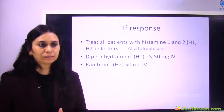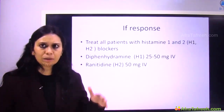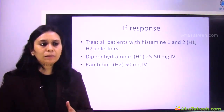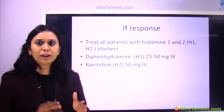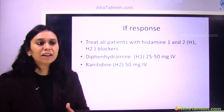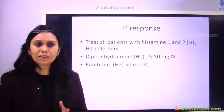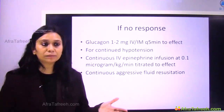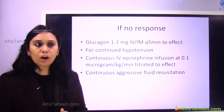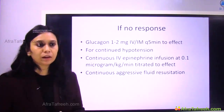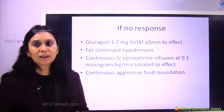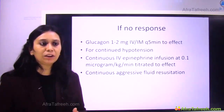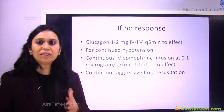If the patient responds to epinephrine and symptoms begin decreasing, give both H1 and H2 blockers: diphenhydramine (H1 blocker) 25 to 50 mg IV, and ranitidine (H2 blocker) 50 mg IV. If there is no response to epinephrine, give glucagon 1 to 2 mg IV or IM every 5 minutes to effect. For continued hypotension, start an epinephrine infusion at 0.1 mcg/kg/min titrated to effect, along with aggressive fluid resuscitation.